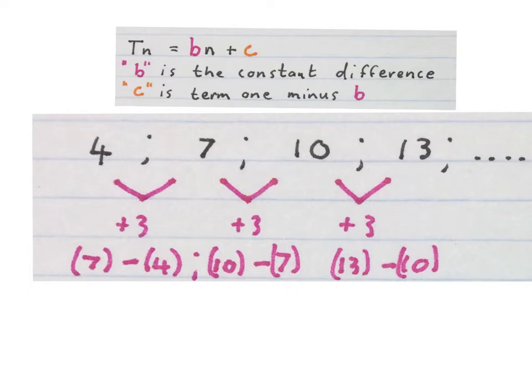Please remember to find this plus 3, you take that 7 minus that 4 get an answer, take the 10 minus the 7 get an answer, and take the 13 minus the 10 and get an answer.